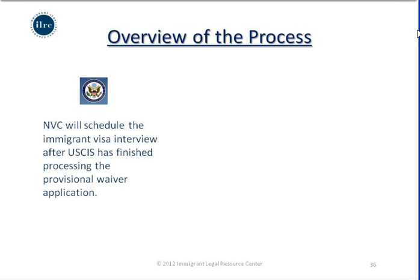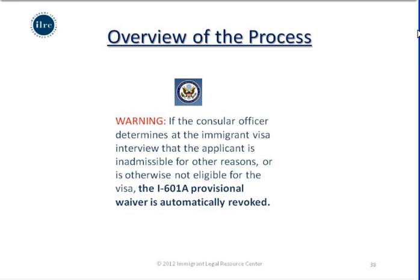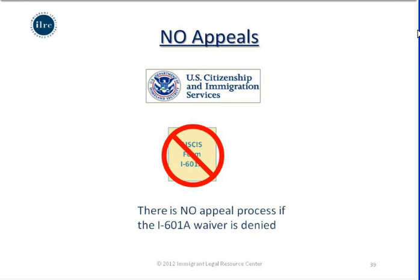Once the National Visa Center receives notice that the I-601A waiver has been adjudicated, it will schedule the immigrant visa at a consulate or embassy abroad. Only then will the applicant need to leave the United States for consular processing. A warning: if the consular officer determines at the immigrant visa interview that the applicant is inadmissible for other reasons or is otherwise ineligible for the immigrant visa, the I-601A provisional waiver will automatically be revoked. There is no appeal process if this waiver is denied, either by USCIS or by the consular officer.